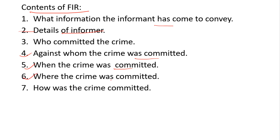Seventh point: how the crime was committed — for example, whether the person was stabbed with a knife or struck with a stick. The nature and details of the attack should be included. In the case of theft, for example, the items stolen — such as a mobile phone or wallet — must be mentioned in the FIR. So these are the contents of FIR.